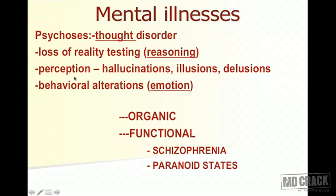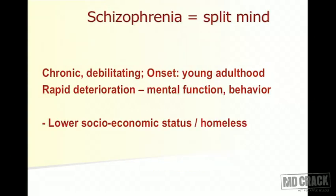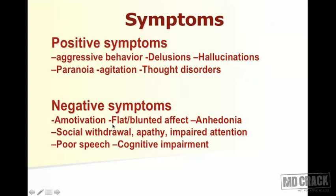Psychosis also involves behavioral alterations and emotional disturbances. It can be organic brain syndromes or functional — including schizophrenia and paranoid states. Drugs for these conditions are called antipsychotic agents. Schizophrenia ('split mind') is a chronic debilitating disorder beginning in young adulthood, with rapid mental deterioration. It is common in lower socioeconomic groups, often leading to homelessness, joblessness, and suicide — 50% of schizophrenics attempt suicide.